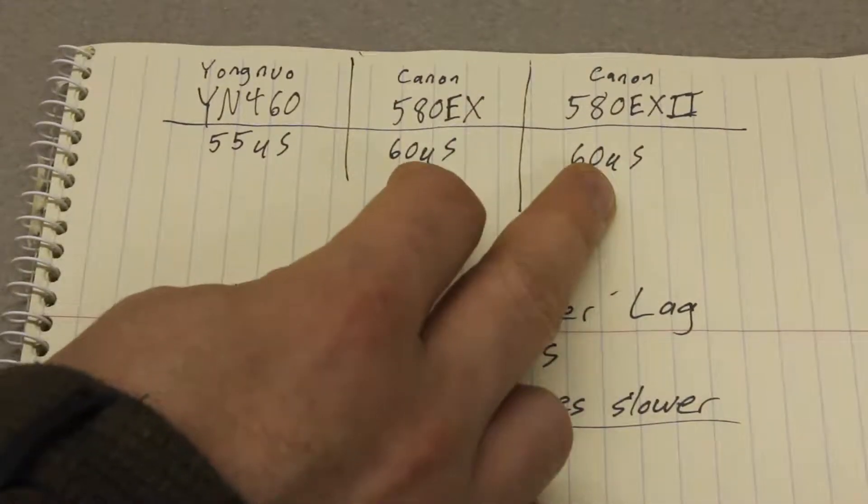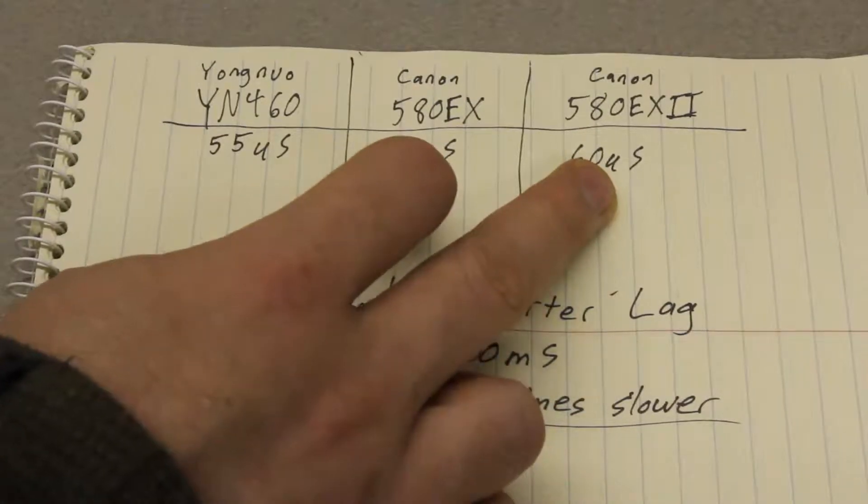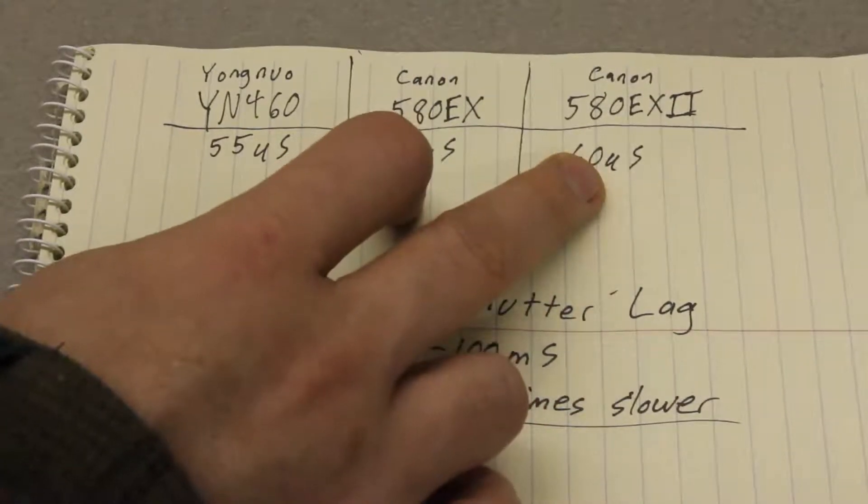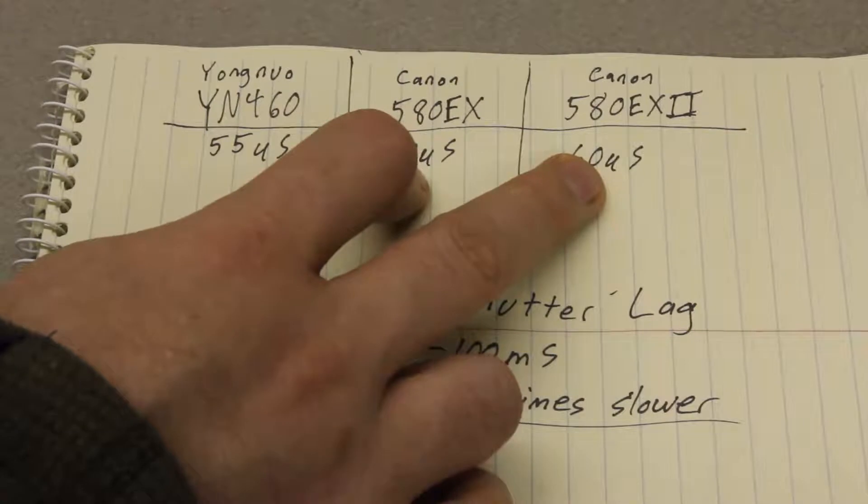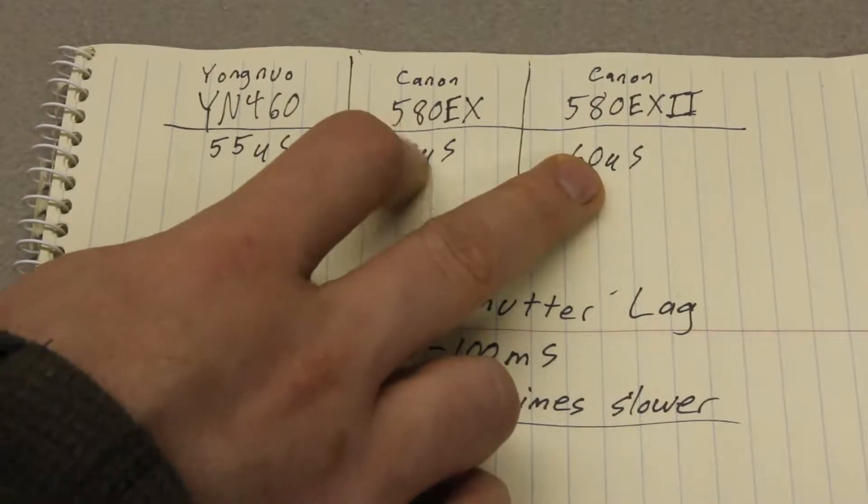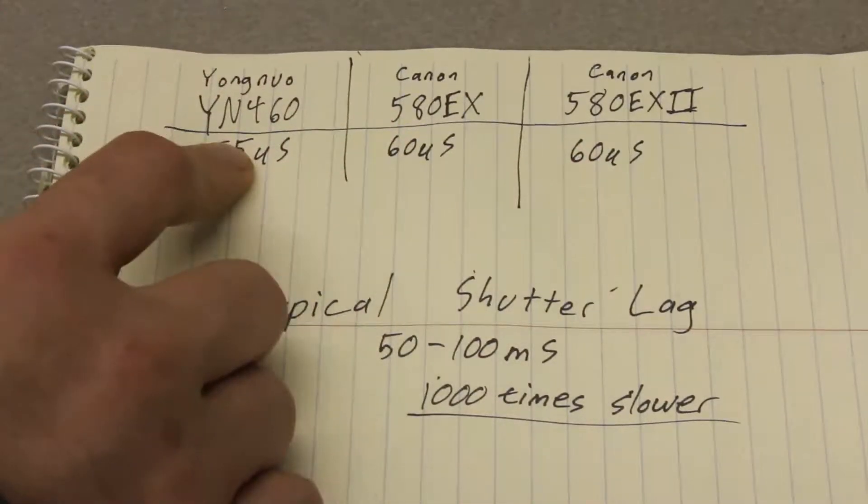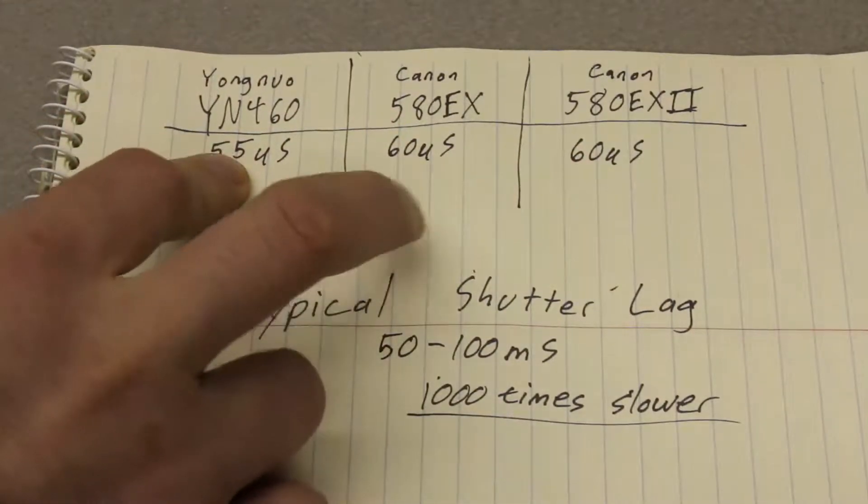And actually these two graphs on the scope looked very similar. I couldn't actually tell any differences. I kind of think that they didn't change the trigger circuitry or the flash tube significantly between these two versions. Whereas the Yongnuo was significantly different.